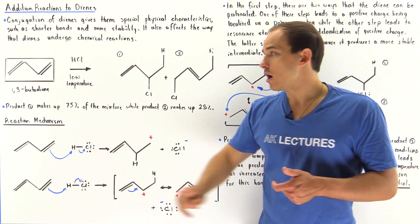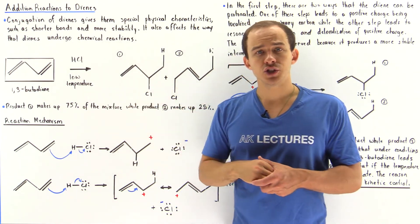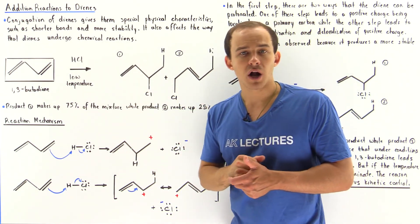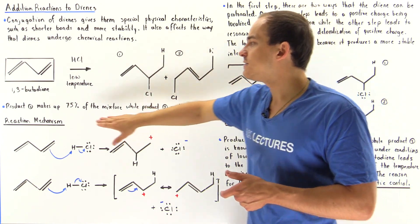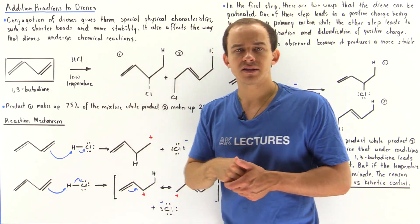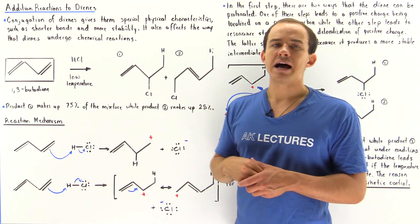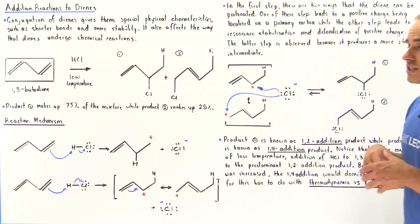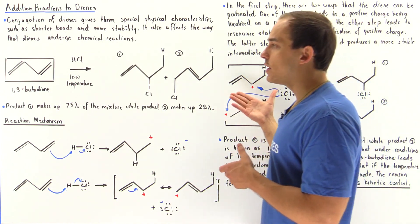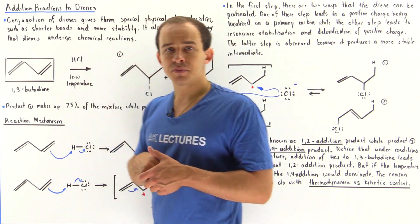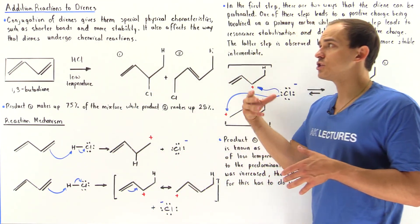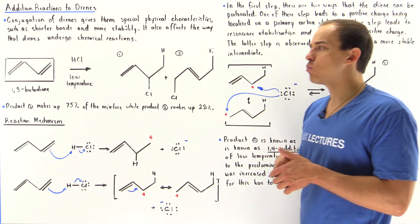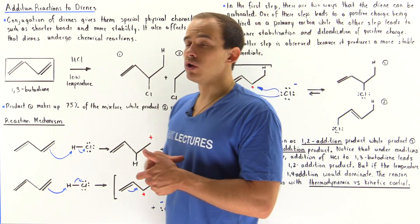Product 1 under these low temperature conditions will predominate over product 2. Product 1 is found 75% of the time while product 2 is found only 25% of the time. In this lecture, we're going to discuss the mechanism by which this reaction takes place and how conjugation affects the pathway that our reaction will take.